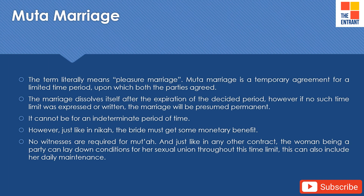Muta marriage. The term literally means pleasure marriage. Muta marriage is a temporary agreement for a limited time period upon which both parties agree. There is no prescribed minimum or maximum time limit — it can be for a day, a month, or a year. The marriage dissolves itself after the expiration of the decided period. However, if no such time limit was expressed or written, the marriage will be presumed permanent. This type of marriage is not approved by Sunni Muslims, but it is considered legitimate by the Twelver Shia sect, which is predominant in Iran and constitutes 90% of India's Shia population.